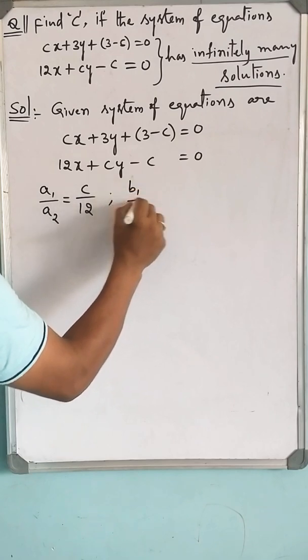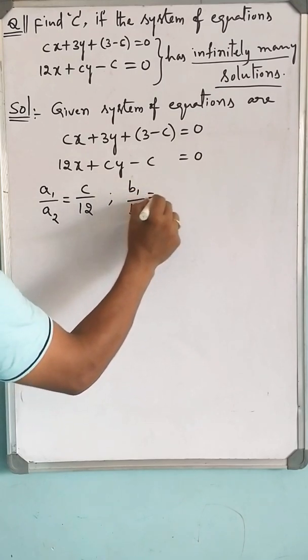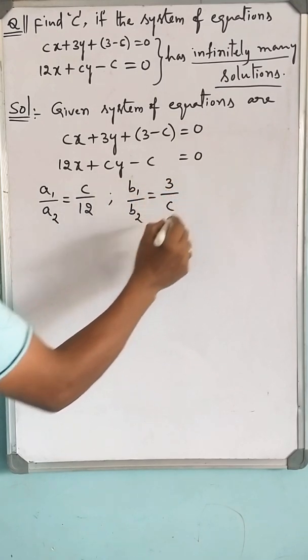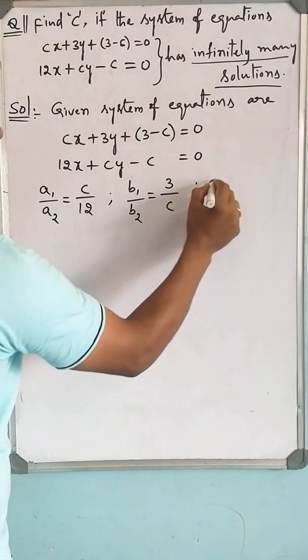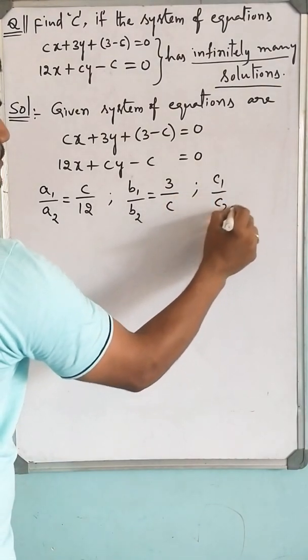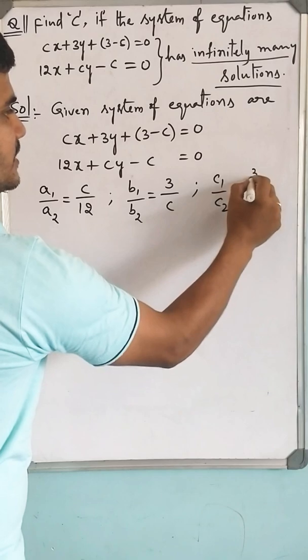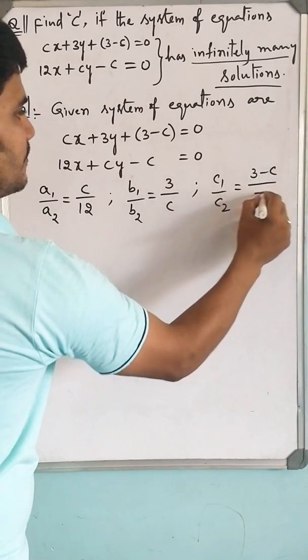The ratio of y coefficients B1 by B2 is equal to 3 by C. Similarly, the ratio of constants C1 by C2 is equal to 3 minus C by minus C.